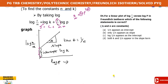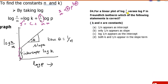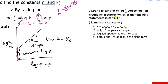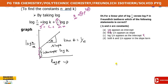Question: For the linear plot of log(x/m) versus log p in the Freundlich isotherm, which of the following statements is correct? k and n are constants. 1 by n appears as the slope. Log k appears as the intercept. So 1 by n appears as the slope and log k appears as the intercept. Your answer is b.